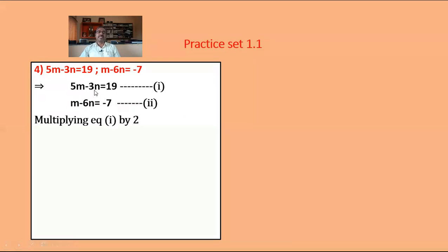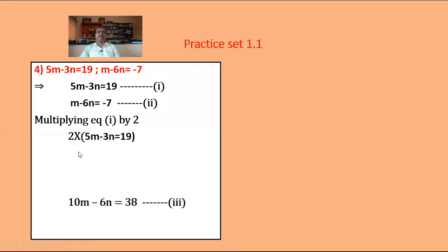Observe the coefficients of m and n in equations 1 and 2. When you multiply equation number 1 by 2, the coefficients of n become equal. Multiplying equation 1 by 2: 2 times (5m minus 3n equals 19) gives 10m minus 6n equals 38 — equation number 3.